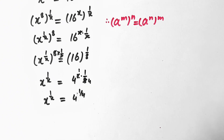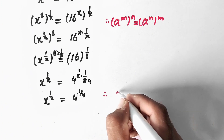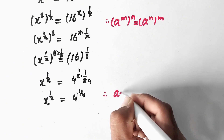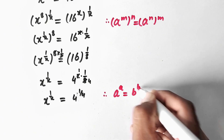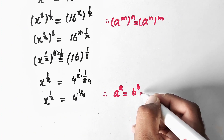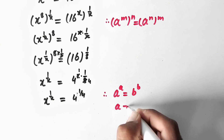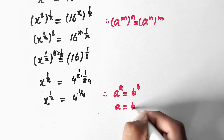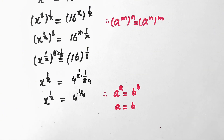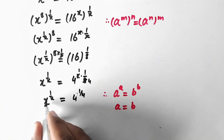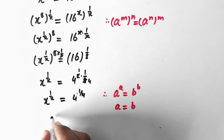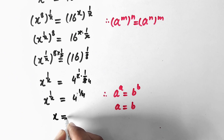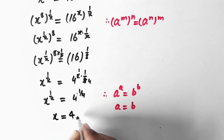Now we apply the rule that if a to power a equals b to power b, then a equals b. Here, since the base and exponent pattern is the same on both sides, we can compare directly and write x equal to 4.